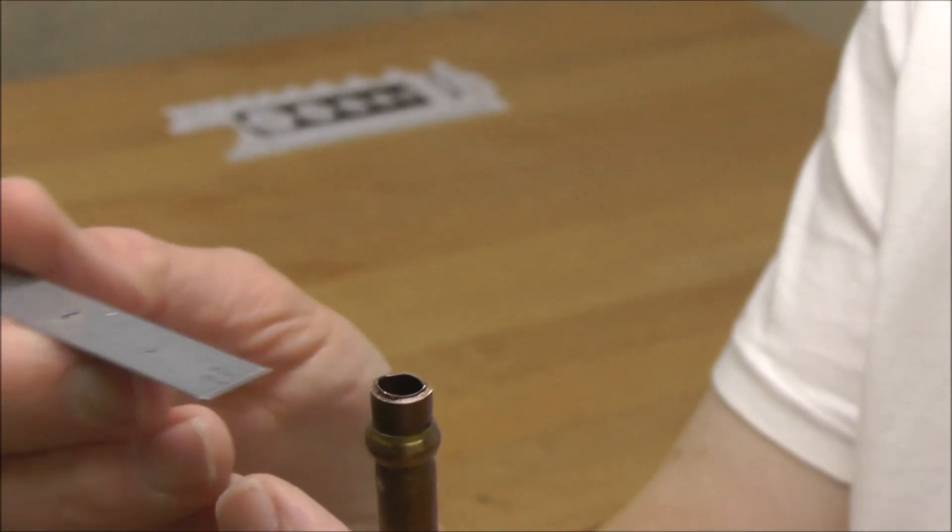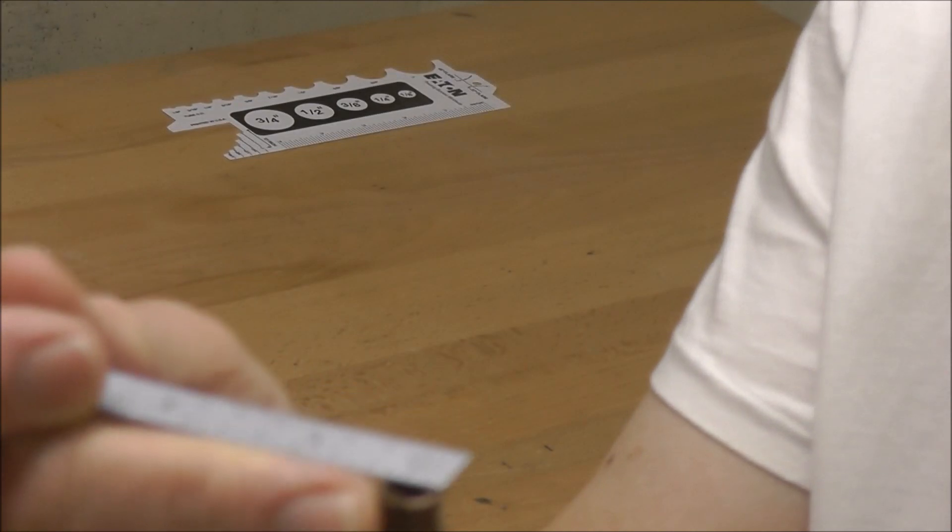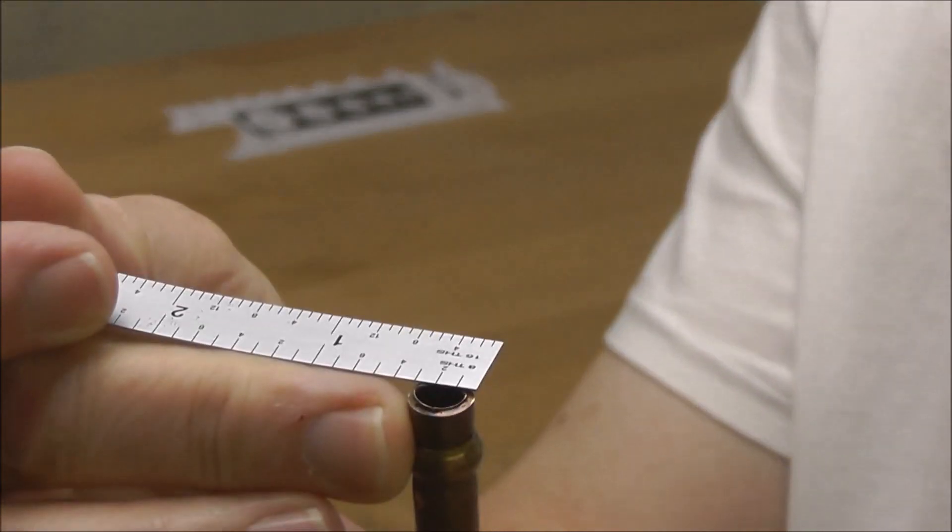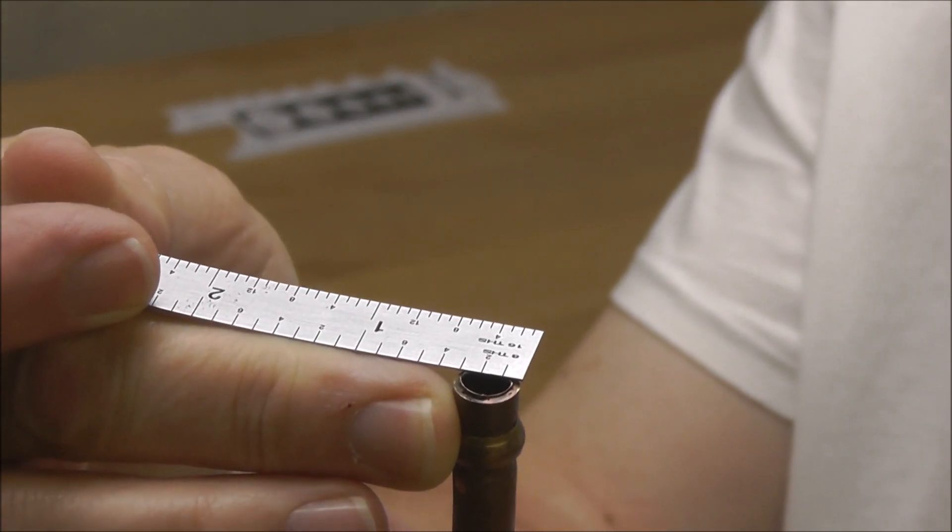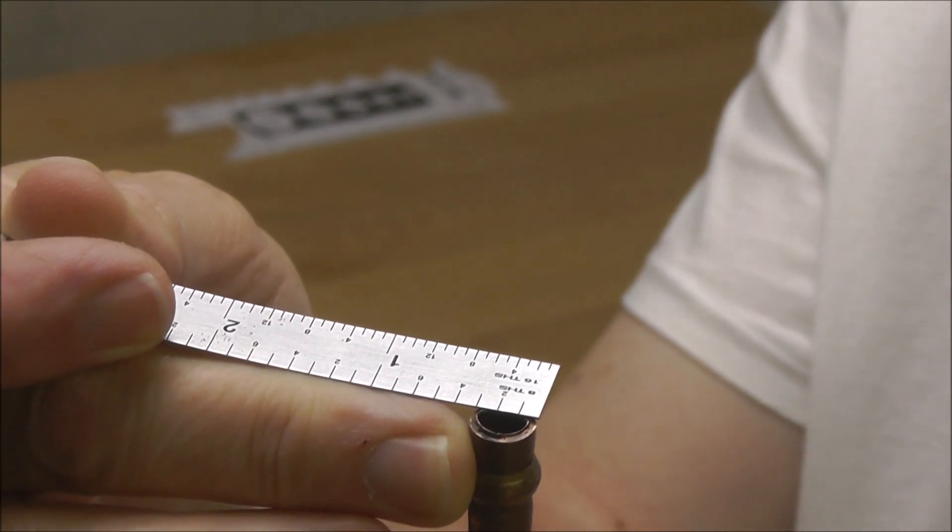You take a rule and you measure the outside diameter of the actual pipe. So in this one here, you have 3 eighths of an inch. So this is going to be 3 eighths inch compression.